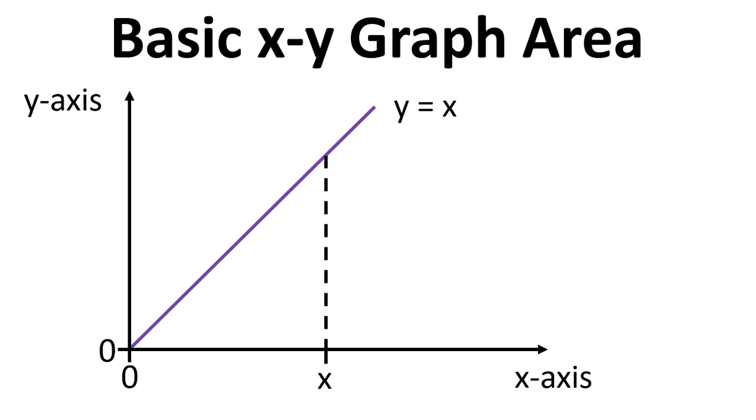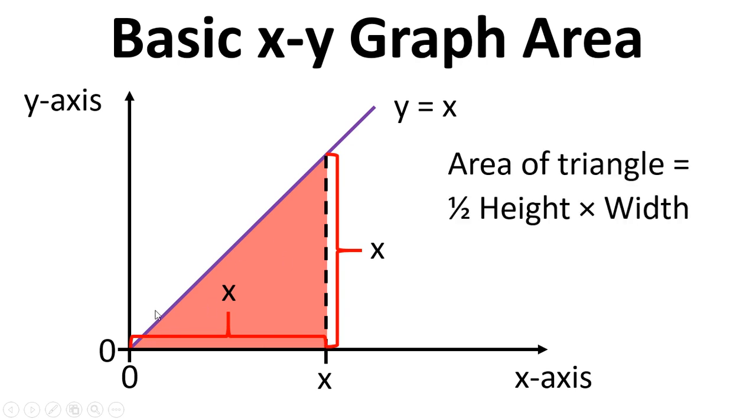So if we pick a point x and want to know the area between 0 and x, if the graph is simply y equals x, then the width will be x and the height will be x and you'll notice that this is a triangle. Now the area of a triangle is half the height times the width, so the area under this line is just a half x squared, because the height is x, the width is x, so it's a half times x times x.